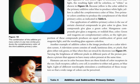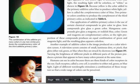Another example of additive colors is the image of color produced on a color television screen. The television screen consists of small luminous dots or pixels that glow either red, green, or blue when they are struck by electrons. See Figure 19.